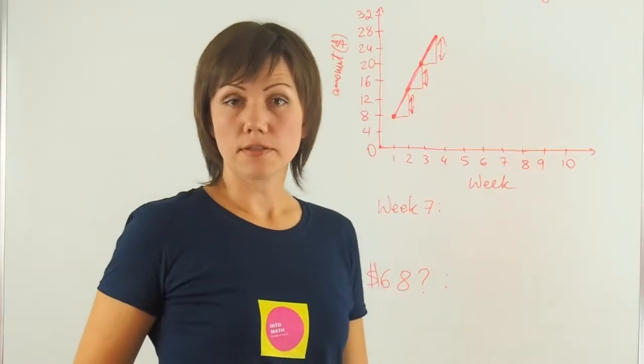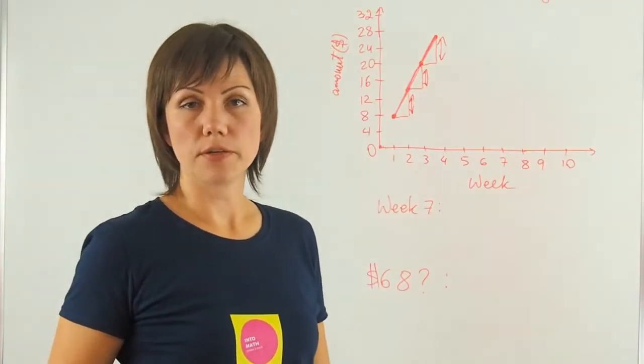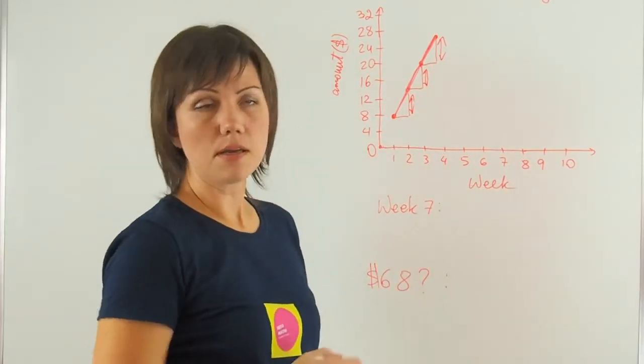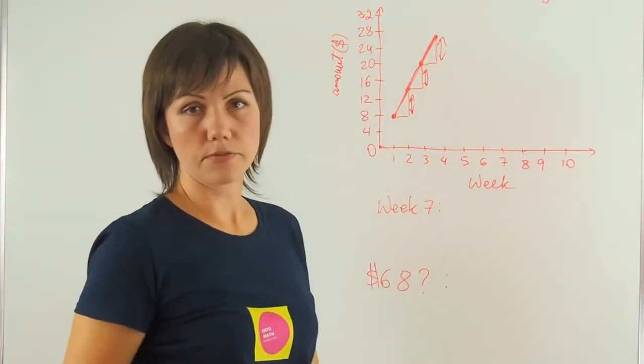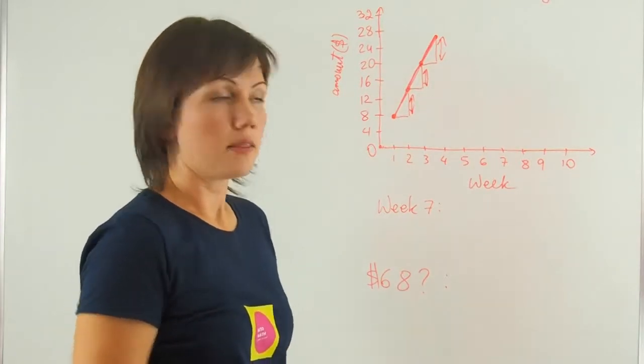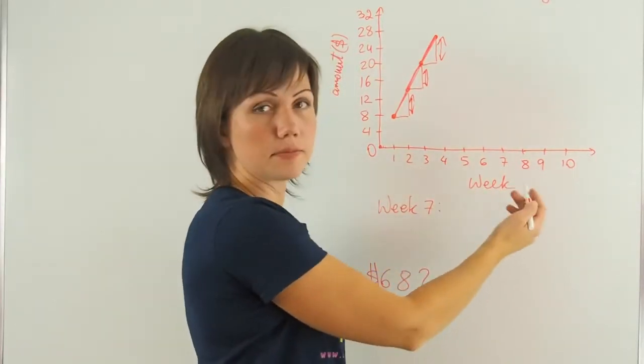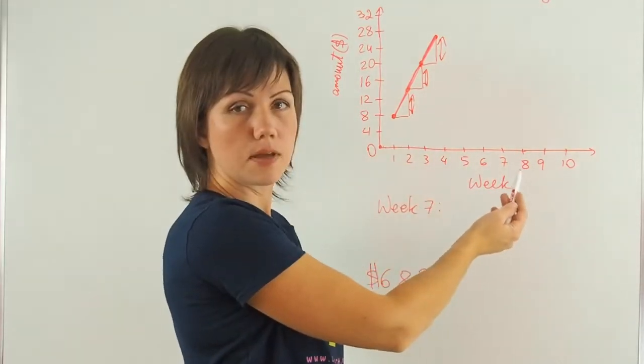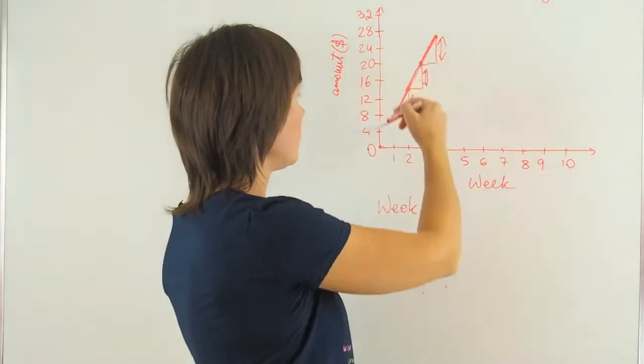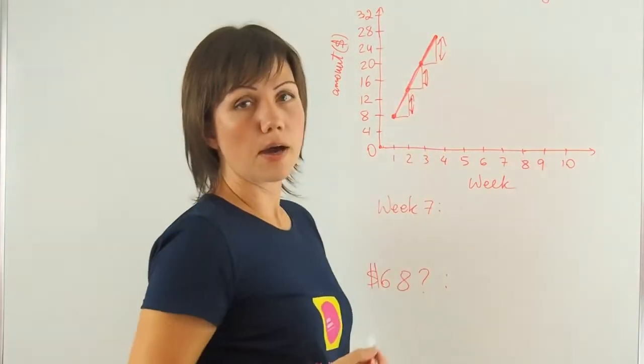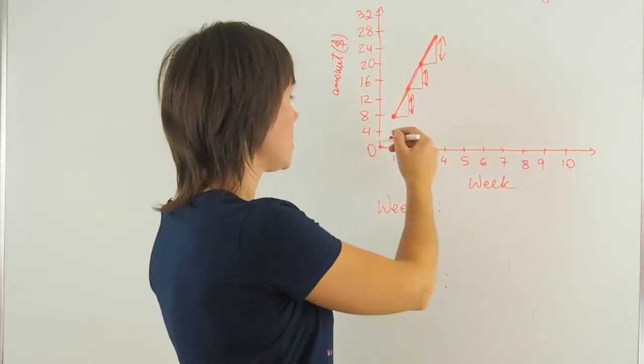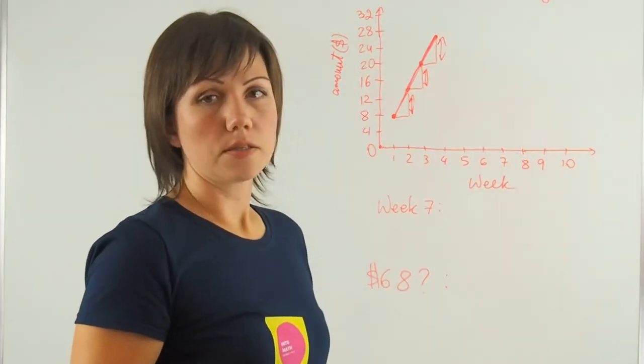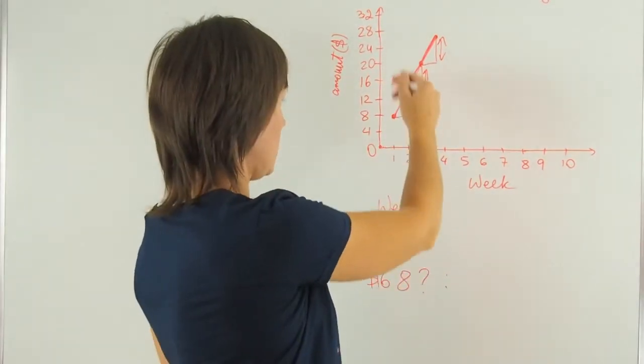In this question you have a relationship between the number of weeks that Joe is saving the money and the amount of money saved per week. The x-axis, week-axis, goes up by ones. And the money-axis, money that we have, goes up by fours. So every box represents two dollars in this case.